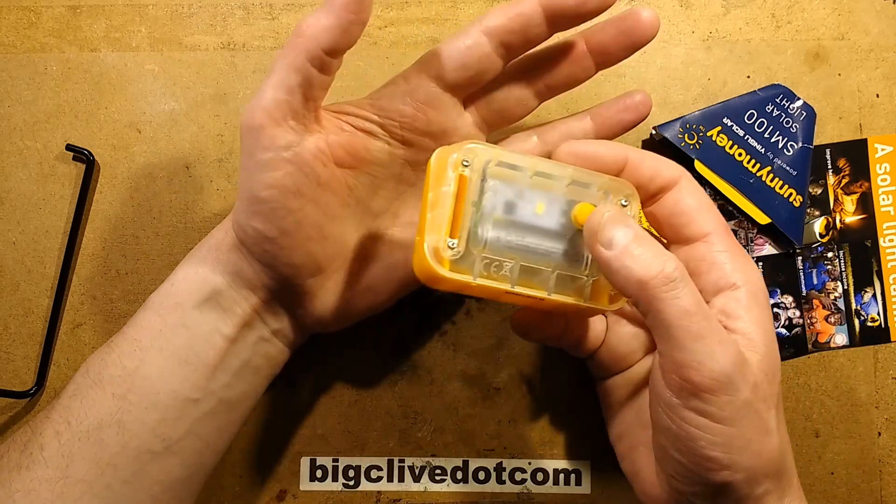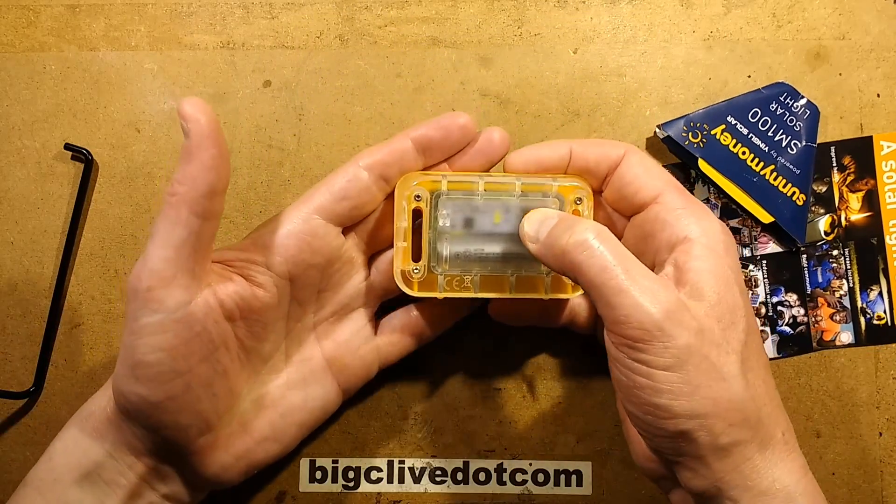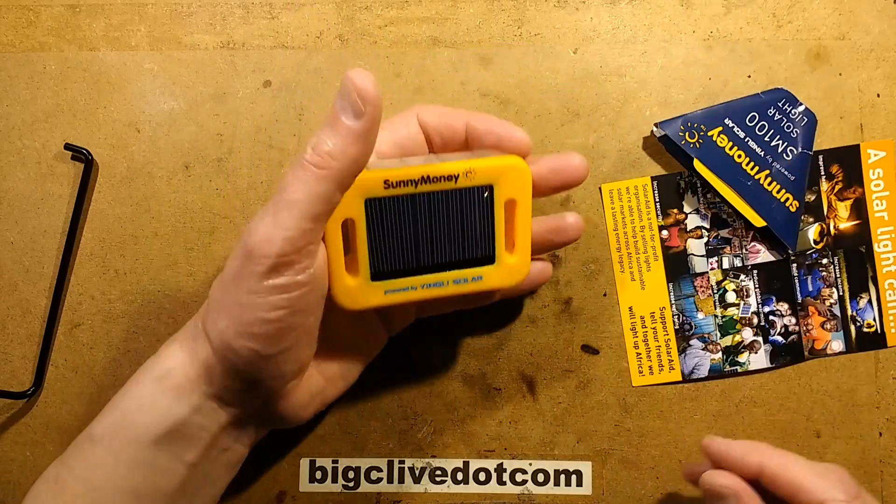Small circuit board in there. It doesn't have dusk sensing like a garden light. Strictly when you need it, you turn it on and off with this button, and you just charge it during the day in the sunshine.